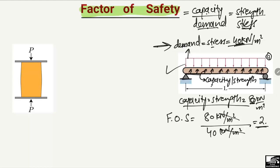It means the strength or capacity of the beam is 2 times the demand or stress acting on it. Keep in mind that the factor of safety is always greater than or equal to 1. In most cases it is greater than 1, but it can never be less than 1, because the capacity must always be greater than or equal to the demand.